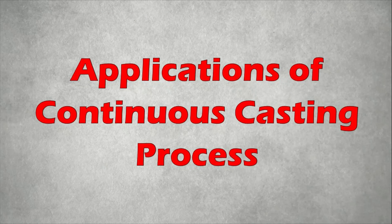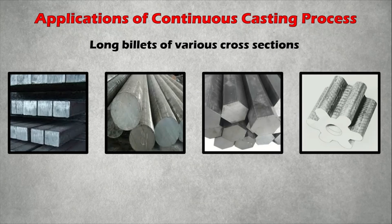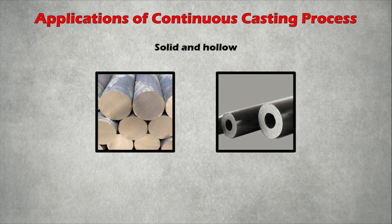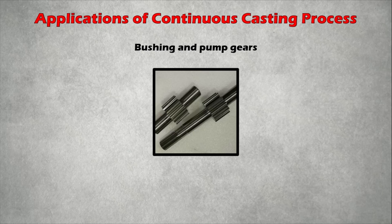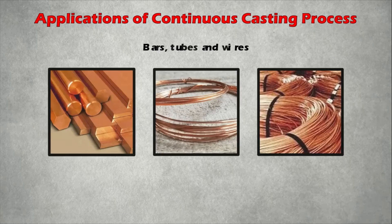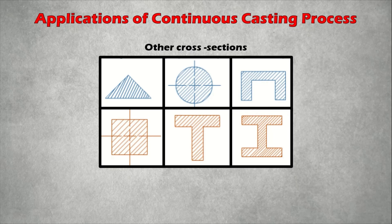Applications of continuous casting include: long billets of various cross-sections such as round, square, hexagonal, and gear-toothed; solid and hollow ingots; bushings and pump gears; production of copper, brass, and bronze bars, tubes, and wires; and other cross-sections.